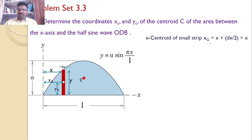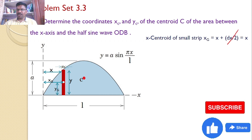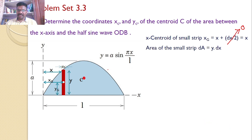The x-centroid of the small strip xg equals x plus dx/2, but dx/2 is very small so we can neglect it, giving xg = x. The height of the small strip is y and the width is dx. Hence, the area of the small strip dA = y·dx.